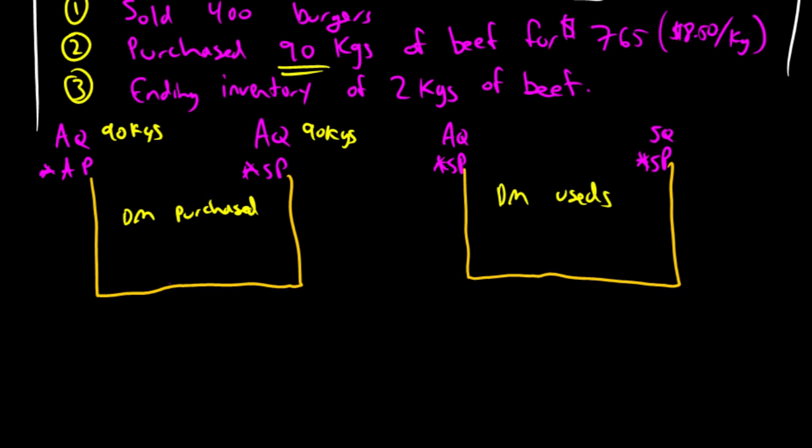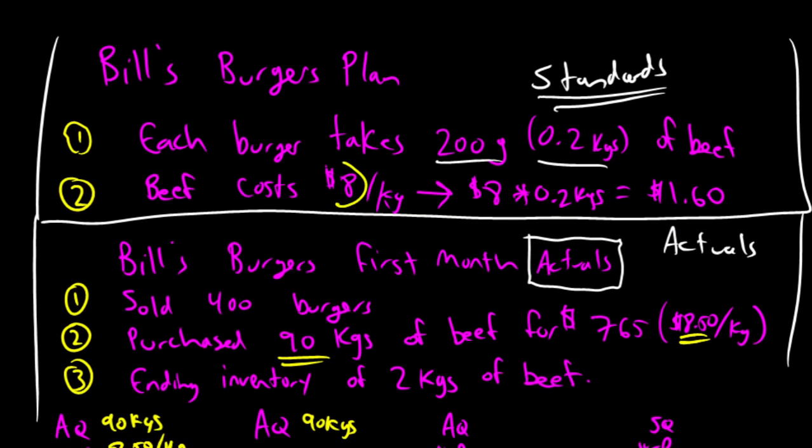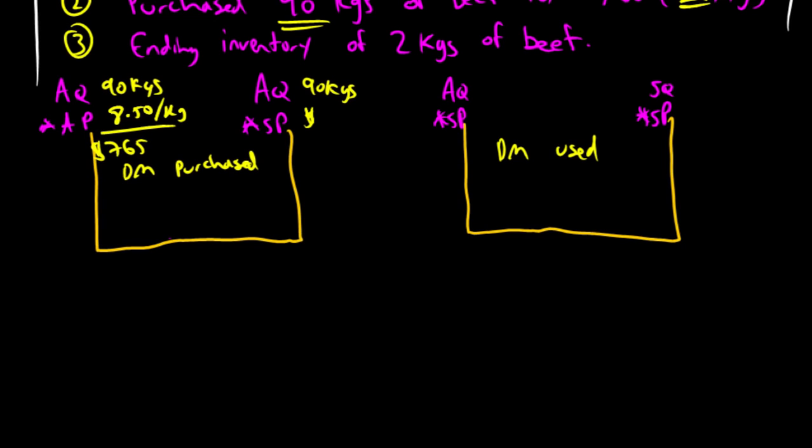The right prong is for direct materials used. I almost filled in the right prong as 90 kilograms, but of course, we used a different amount from what we purchased. So, we purchased 90 kilograms. Our actual price we paid was $8.50 per kilogram. So, if I multiply them through, you'll find I paid $765 for my direct materials that I purchased. 90 kilograms is still my actual quantity for the right-hand prong. My standard price here, I've got to go up to my standards. Bill said it should cost me $8 per kilogram. So, my standard price is $8. So, 90 times 8 is $720.